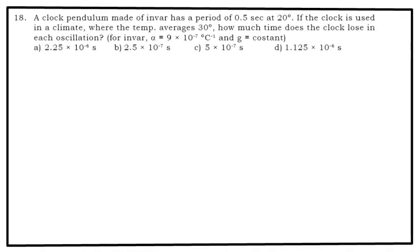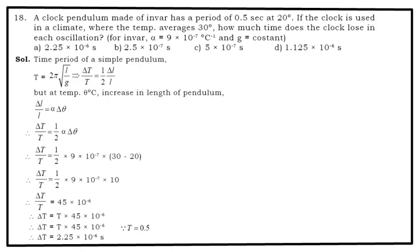A clock pendulum made of Invar - Invar is a metal alloy, it is iron alloy basically. Has a period of 0.5 seconds at 20 degrees. If the clock is used in a climate where temperature average is 30 degrees, how much time does the clock lose in each oscillation? For Invar, α = 9×10⁻⁷ per degree Celsius and g is constant. Options are there in front of you. Time period of a simple pendulum: T = 2π√(L/g). ΔT/T = (1/2)·ΔL/L. Why? Because T is directly proportional to square root of L. So power of L is half. So error in the measurement of time is equal to half times the error in the measurement of length. Now, the increase in length also depends on temperature.